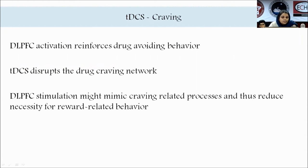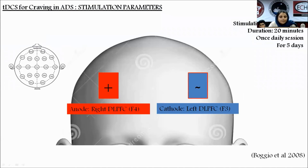DLPFC activation reinforces drug-avoiding behavior and tDCS disrupts the drug craving network. DLPFC stimulation might mimic craving-related processes and thus reduce the necessity for reward-related behavior. For substance use, a 35 cm² electrode is used, 2 mA stimulation intensity, once daily for five days, 20 minutes duration. The anode is placed over the right DLPFC — F4 of the 10-20 EEG system — and cathode over the left DLPFC, corresponding to F3.